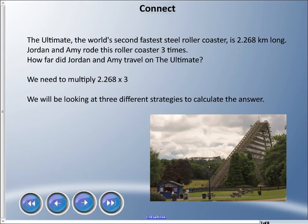Let's talk about a particular roller coaster called the Ultimate. It's the world's second fastest steel roller coaster and it's 2.268 kilometers long. Jordan and Amy rode this roller coaster three times. How far did they travel? We need to multiply 2.268 times 3.